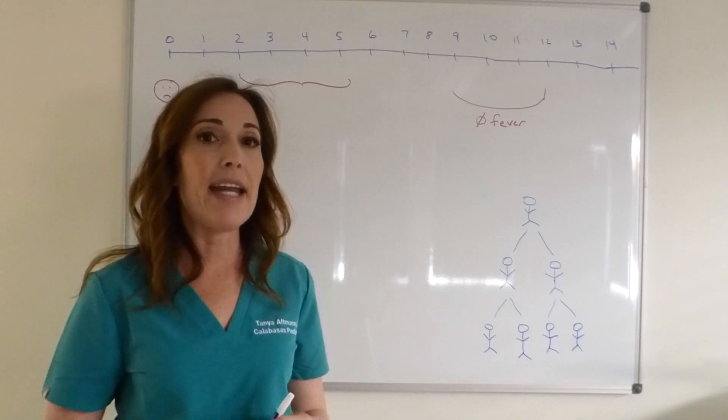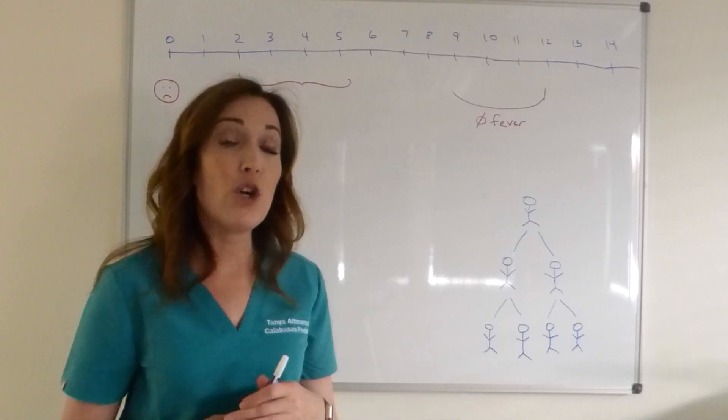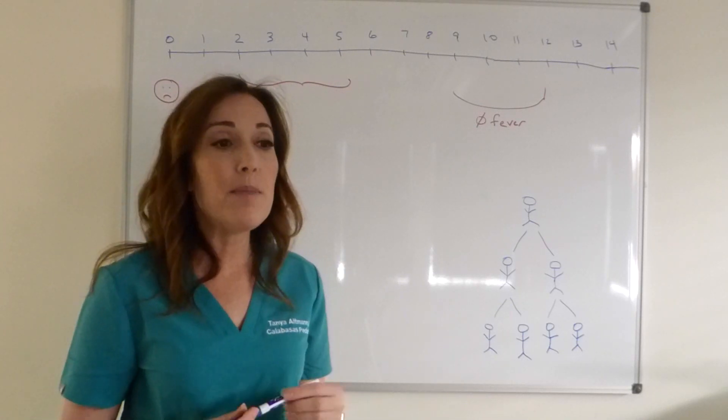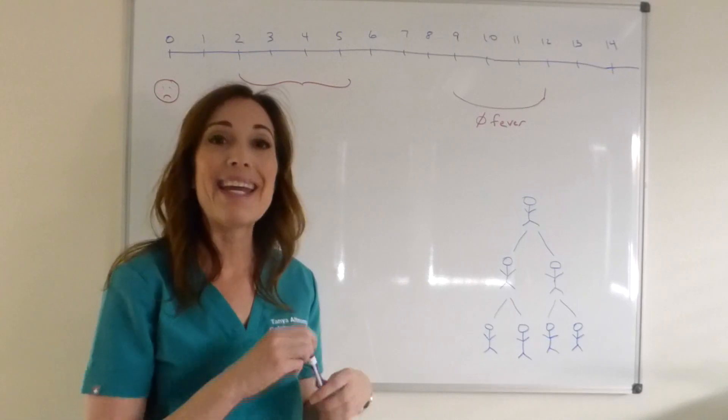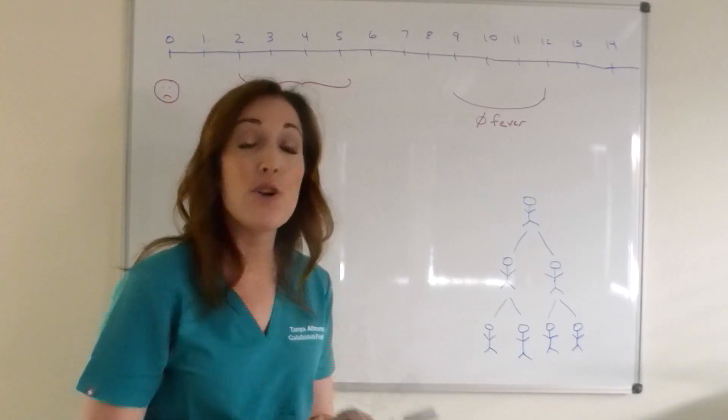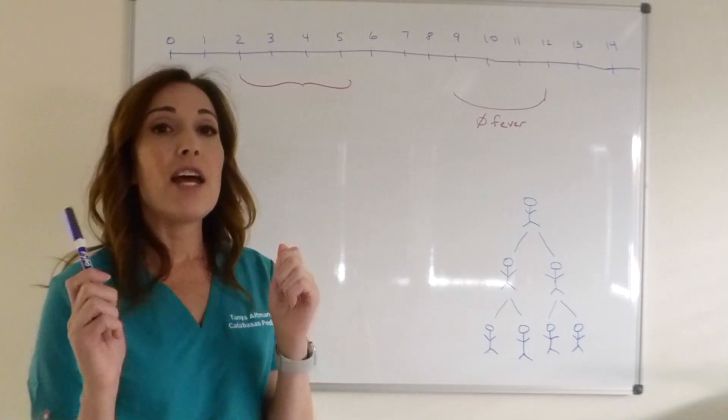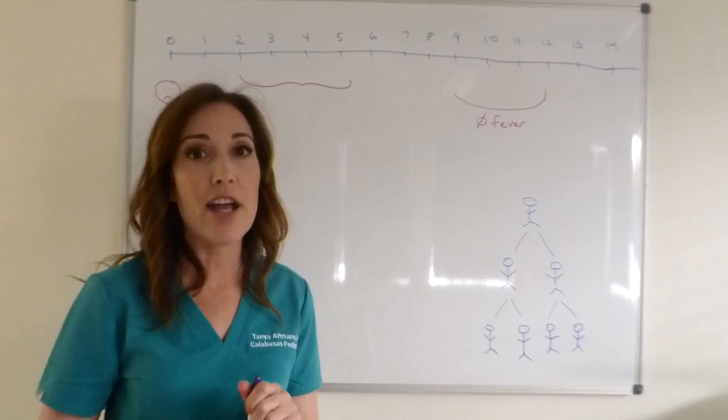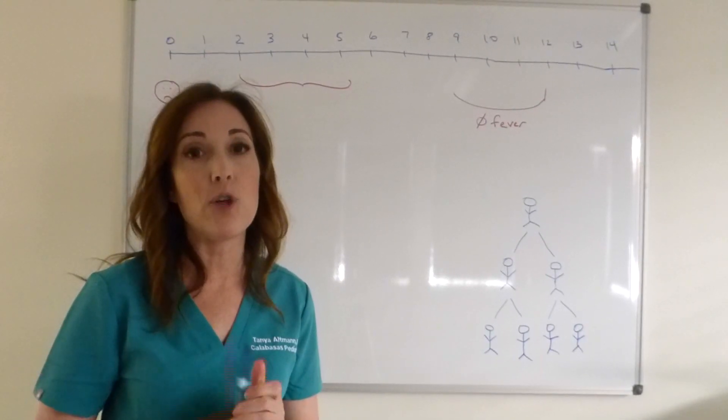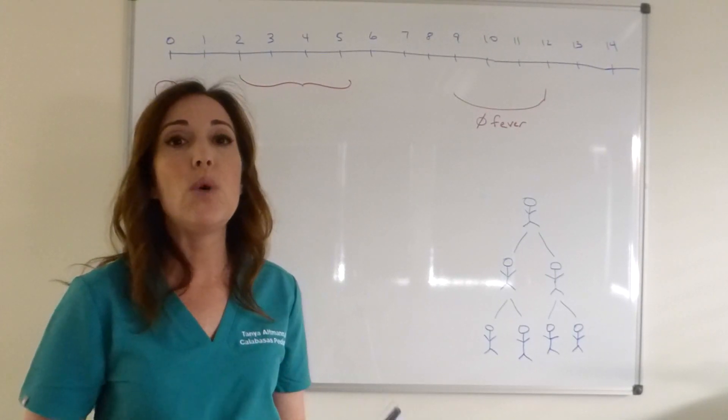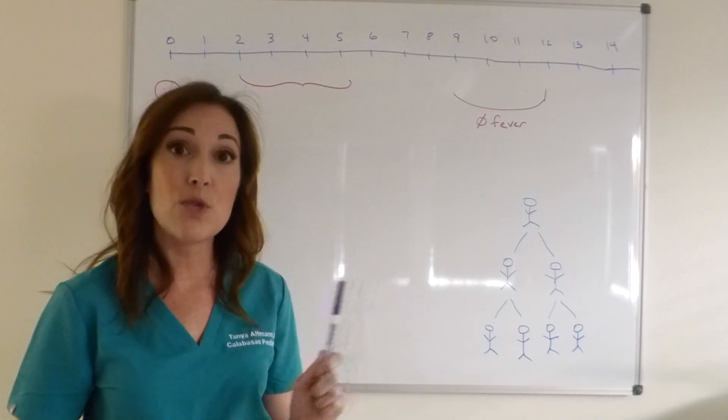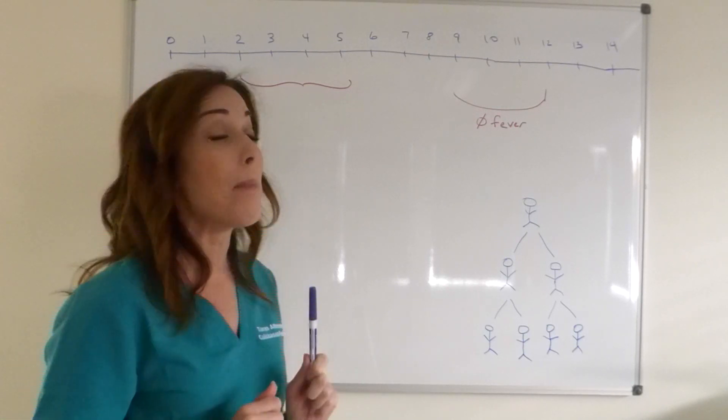So that will be any children that have been near Henry within six feet for over 15 minutes. So that could be anyone that he played with at recess, whoever he ate lunch with, or people who sat really close to him in the classroom. And they're going to need to get notified and say there's a potential chance that your child may have been in contact with someone who may have COVID-19. We need you to stay home and we will let you know as soon as possible if they have truly been exposed.